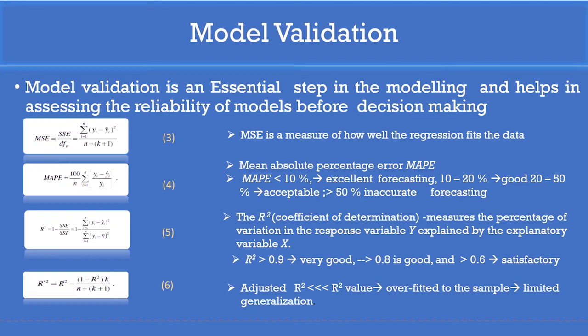The mean square error (MSE) is the first parameter widely used to validate the model. MSE is a measure of how well the regression fits the data. Mean absolute percentage error (MAPE) is another important parameter also used to evaluate the reliability of the model. If MAPE is less than 10%, the model fits the data in an excellent manner. If MAPE is 10 to 20%, the model is good to acceptable. If MAPE is greater than 50%, the model is inaccurate and cannot be used for forecasting.